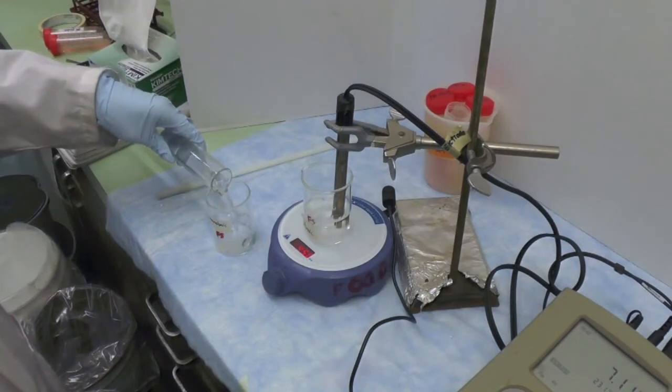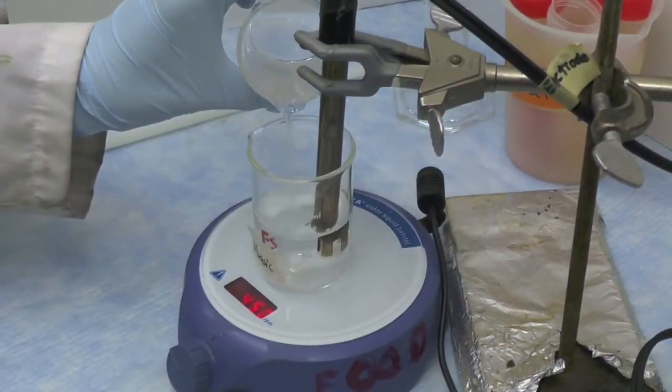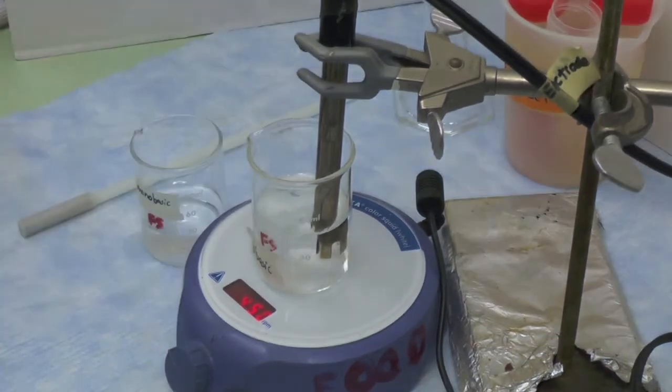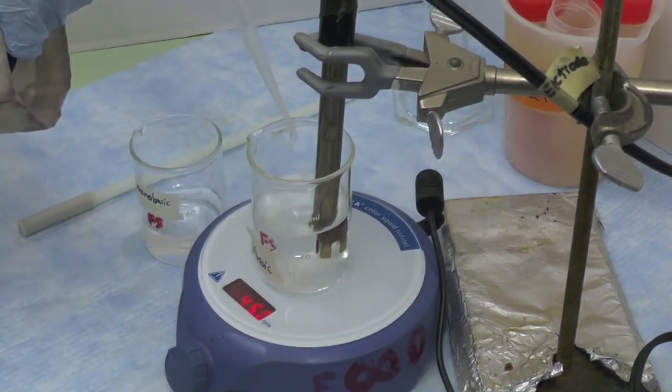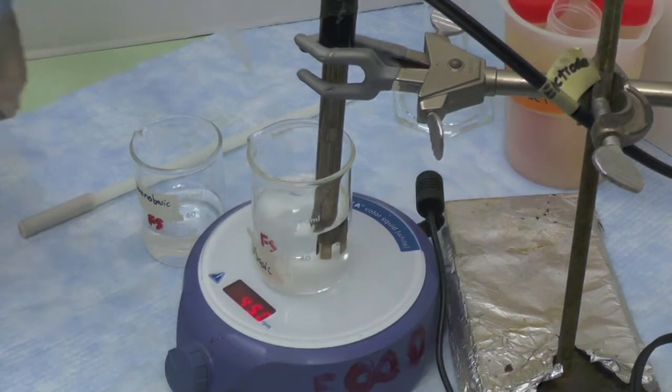While measuring the pH, slowly add the monobasic phosphate solution to the dibasic phosphate solution until pH 7.0 is achieved. As the pH approaches pH 7.0, add using the disposable transfer pipette so you have better control not to overshoot.